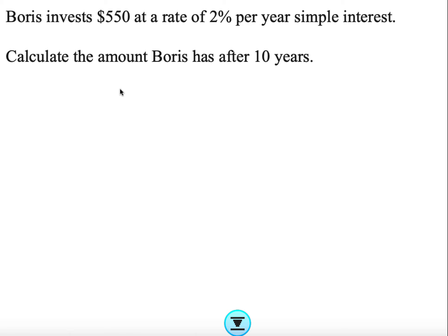Questions are very clear about which rate to use. In this example, this is a past paper question, three marks. Boris invests $550 at a rate of 2% per year simple interest. Calculate the amounts Boris has after 10 years. Sometimes they say per annum, so just be aware of this. They're telling you it's simple interest - be careful about this because students do get confused with compound interest. We want the amount, meaning the total in the end, not the interest.